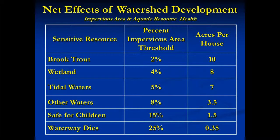This extent is usually expressed in terms of the percent of a watershed covered by buildings, streets, parking lots, and other impervious surfaces. In this table we see that highly sensitive ecosystems, such as those supporting brook trout, perish when more than 2% of the watershed is covered by impervious surfaces. At an imperviousness of 25%, our waters become biological deserts devoid of most native aquatic organisms.